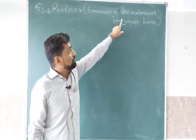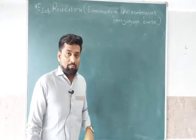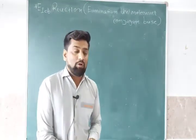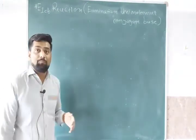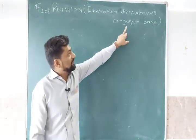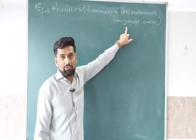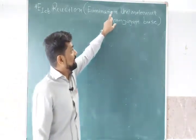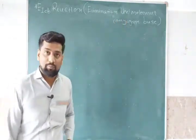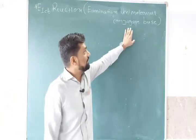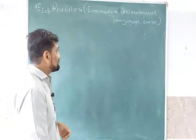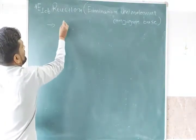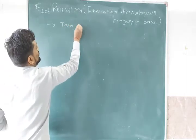Here, Elimination Unimolecular Conjugate Base — the name of this elimination reaction comes from the fact that this reaction proceeds throughout with the starting material as a conjugate base. So the conjugate base is the starting base here. That is why this reaction is known as Elimination Unimolecular Conjugate Base. E1CB reaction proceeds in two steps.